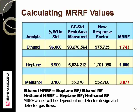Because the methanol peak is so small in most of these analyses, a change in its MRRF value will not have much effect on the overall content calculation. However, the ethanol peak is a very large peak, and even a modest change in its MRRF value can have a significant effect on content.